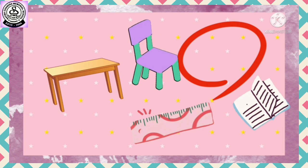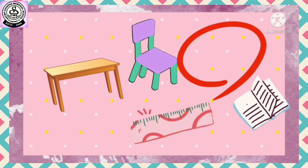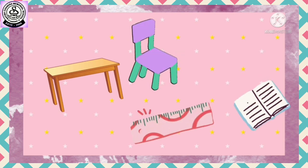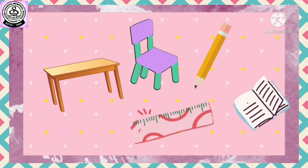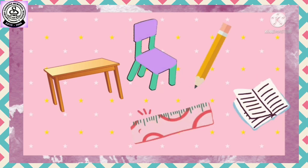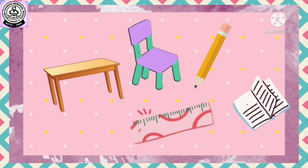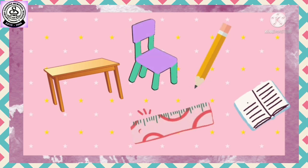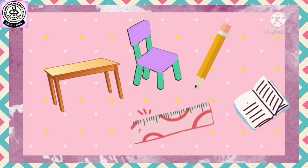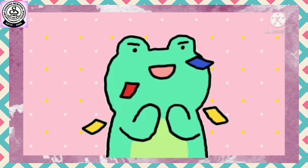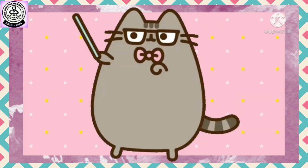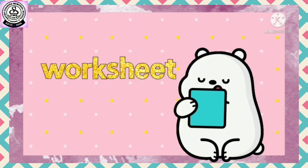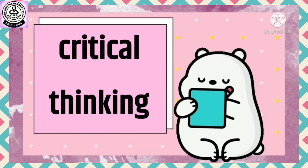Yes! The pencil is missing. I'll put the pencil back — now there are five objects: table, chair, pencil, copy, and scale. Very good, my dear kids! Now we are going to do a worksheet on critical thinking. Yes!